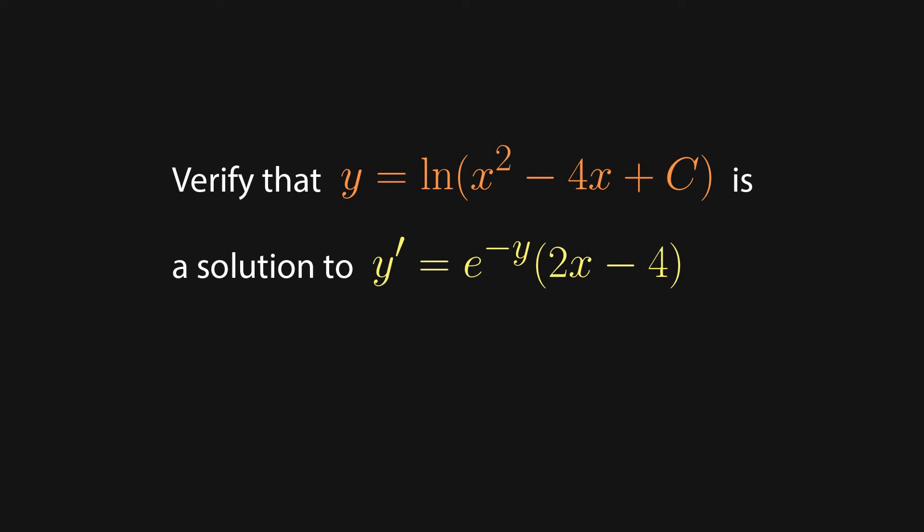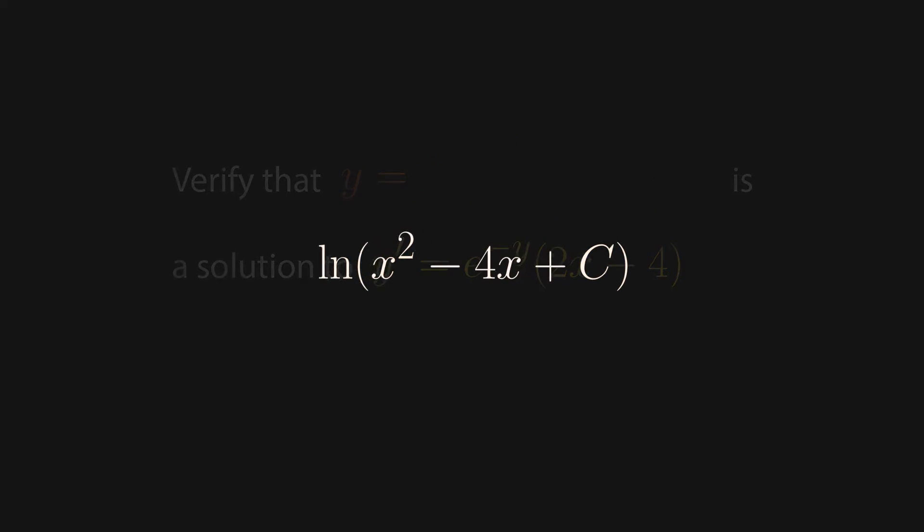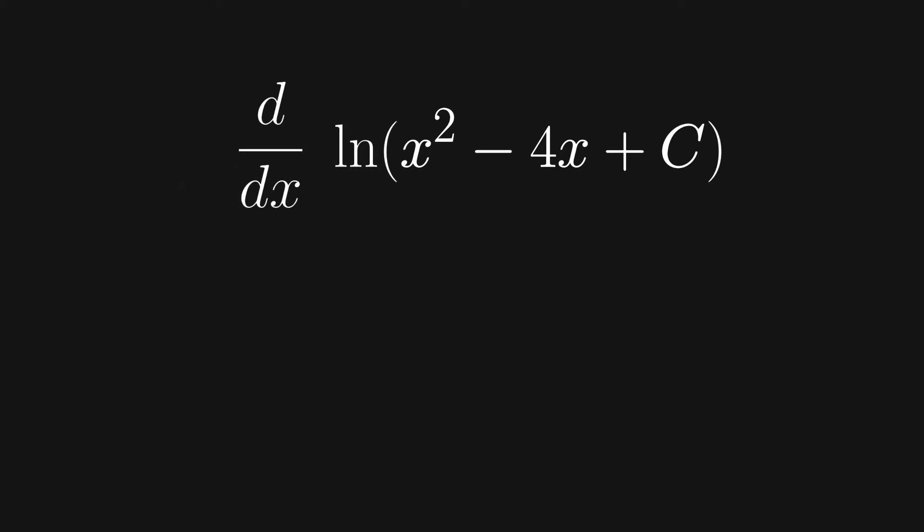Let's take a look at the following problem. Verify that y equals natural log of x squared minus 4x plus c is a general solution to y' equals e to the negative y times 2x minus 4. First, we're going to find the left side of the equation, and to do that, we just need to take the derivative of the natural log of x squared minus 4x plus c.